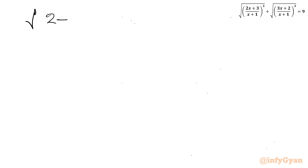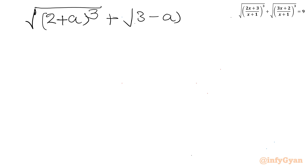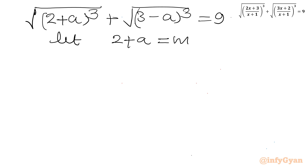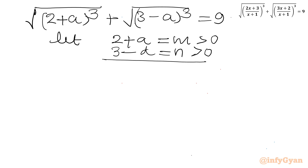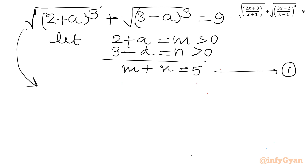So I can write our equation as the cube root of (2+a) plus the cube root of (3-a) equals 9, where a = 1/(x+1). Now I assume 2+a = m and 3-a = n. For real solutions, m and n should both be greater than 0. Adding these two equations, m+n = 5. Call this equation 1. After substitution, our equation becomes: cube root of m³ plus cube root of n³ equals 9, i.e., √m³ + √n³ = 9.